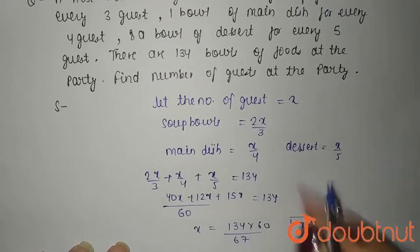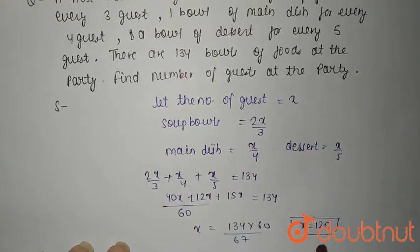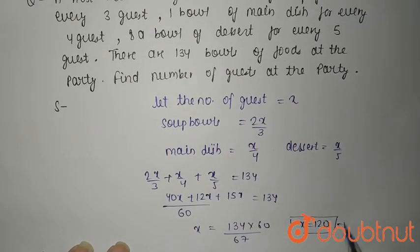x equals to 120. So x is nothing but number of guests. So number of guests is 120.